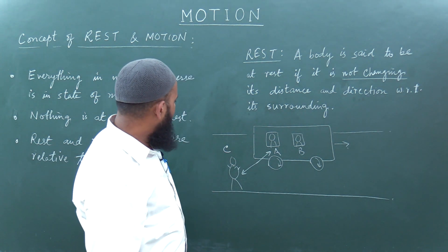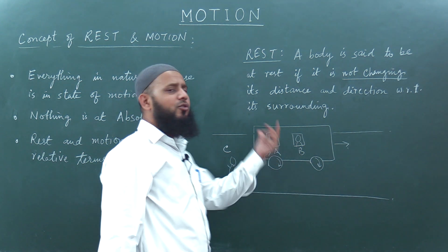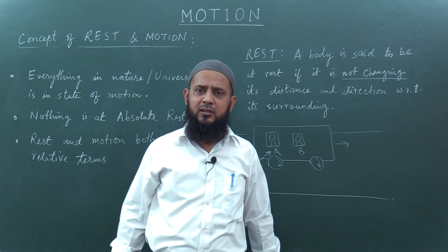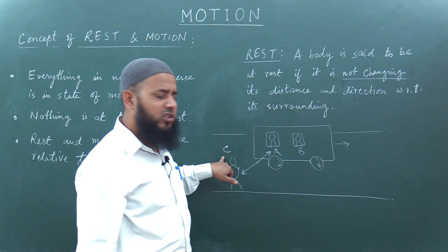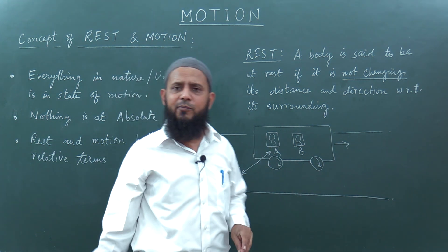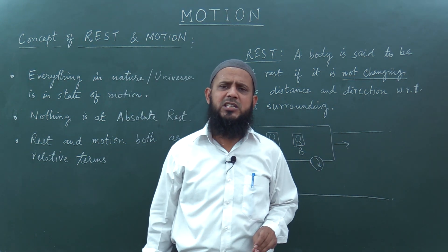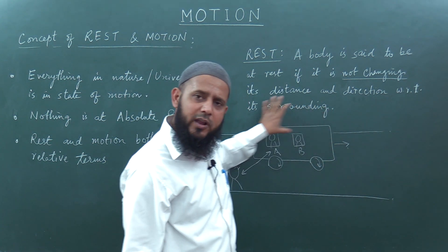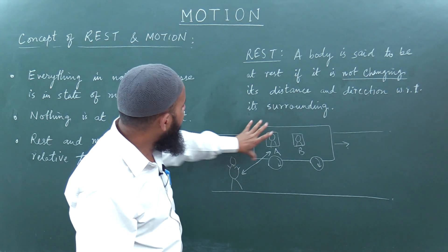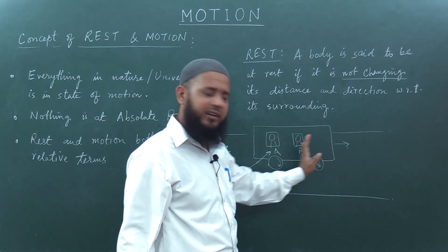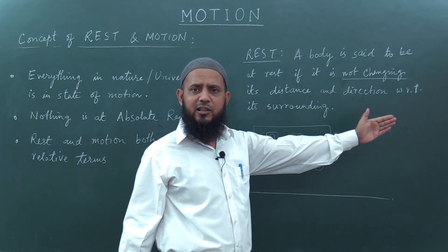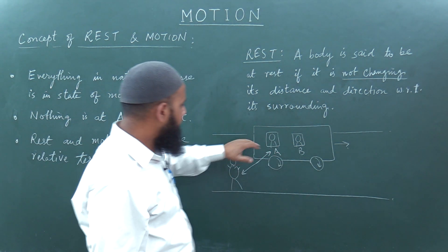What about C with respect to A? How does A see C? Since A's reference frame is moving at a particular velocity, and C's surroundings are not moving, C is also in motion as seen by A. So C will see A going forward, and A will see C going backward — the direction of motion is opposite when the reference frame changes.